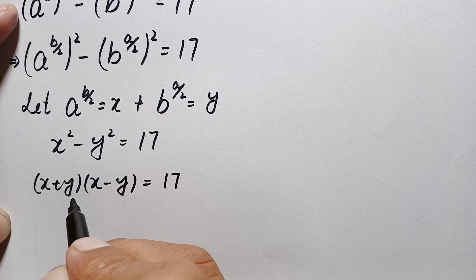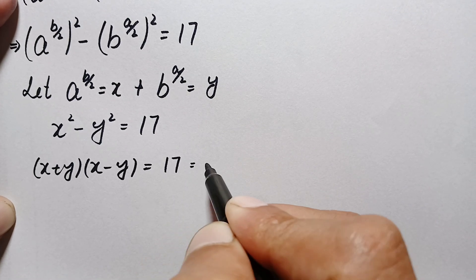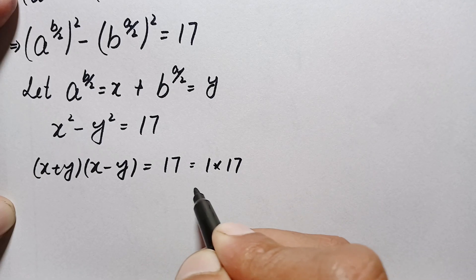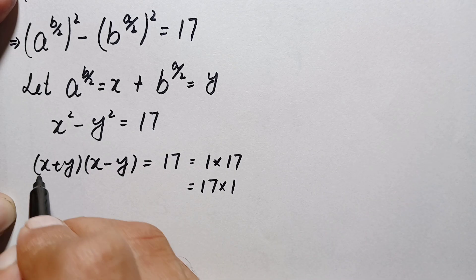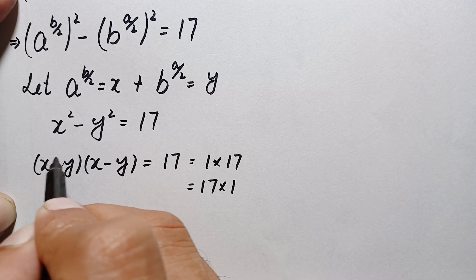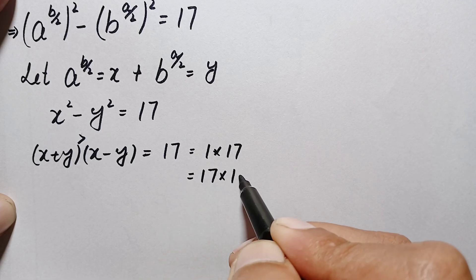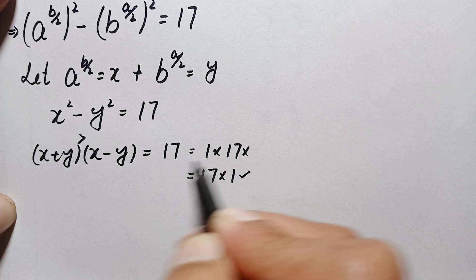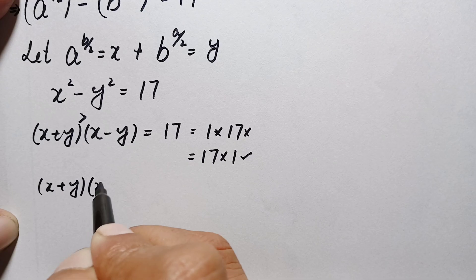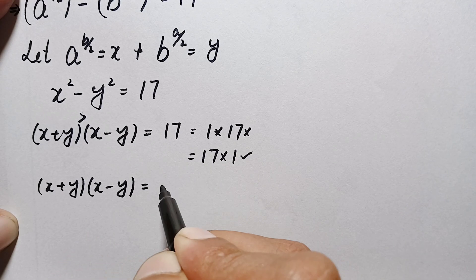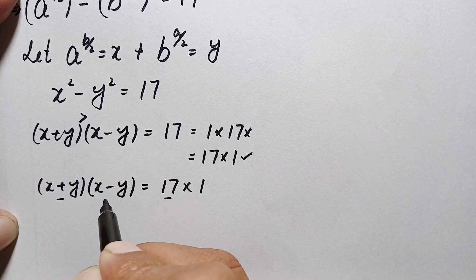On the left-hand side we have two expressions, so we also factorize 17 on the right-hand side. We can write 17 as 1 times 17, or as 17 times 1. Since for any two numbers x and y, x plus y is always greater than x minus y, we take only the pair 17 and 1 and reject the reversed pair. So (x + y)(x − y) = 17 × 1.